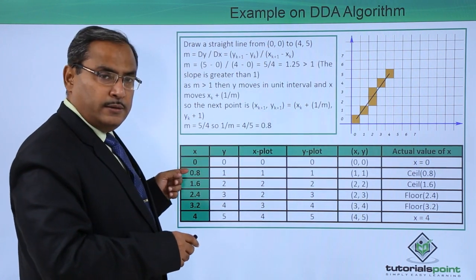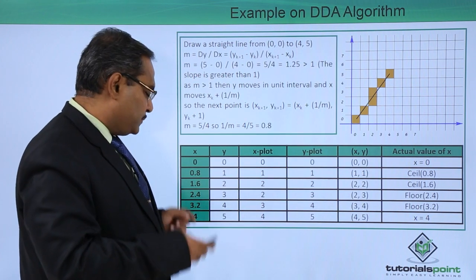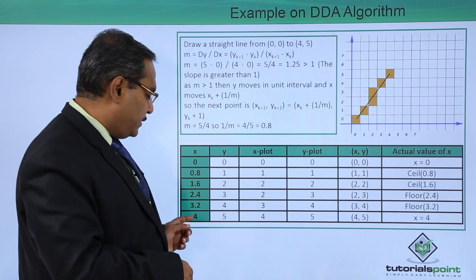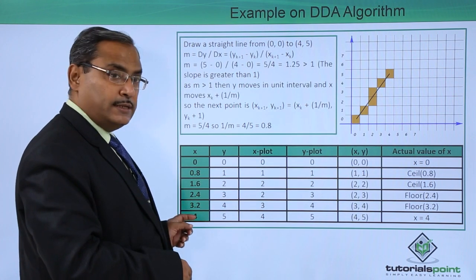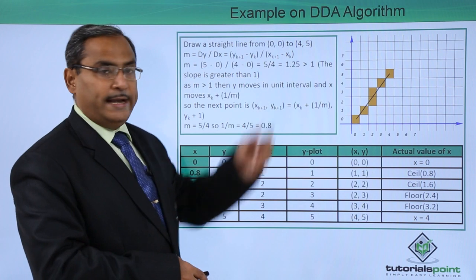This increment for x will be 1 by m and that is 0.8 and it will be starting from 0. 0.8 plus 0.8 is 1.6, plus 0.8 is 2.4, plus 0.8 is 3.2, plus 0.8 is 4. In this way you are getting this and we have reached to the point (4, 5), that is our ending point.